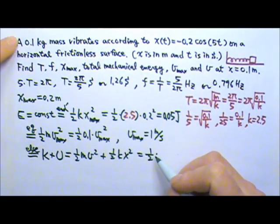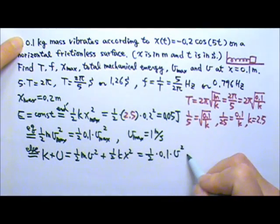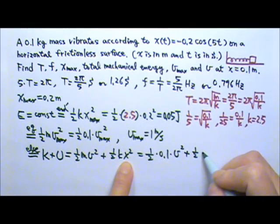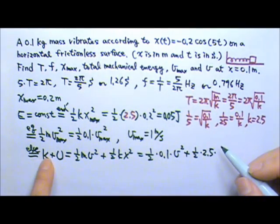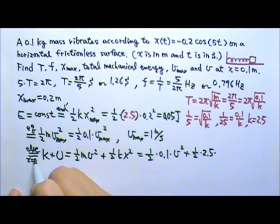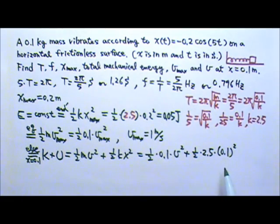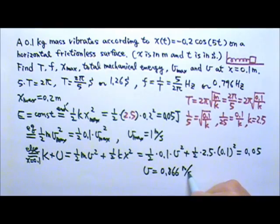So 1 half m, 0.1 times v squared. We're looking for this v, and we have 1 half k is 2.5 times the x right now. This x is 0.1, so we have 0.1 squared over here. And this total mechanical energy still equals to the same 0.05 joules. So we set this equal to 0.05 and then solve for v. We'll have only one unknown, so we can find the v. And in this case, you will find the speed to be 0.866 meters per second.